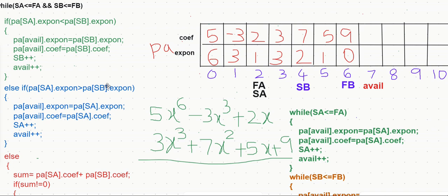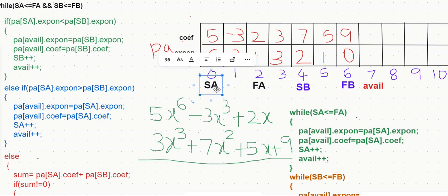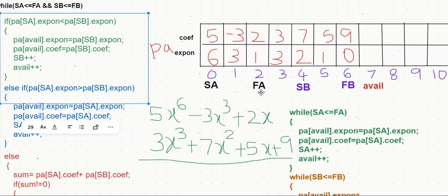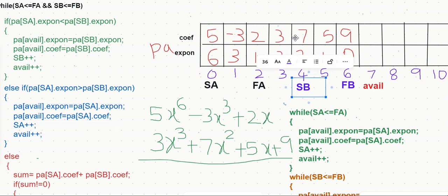We have already seen the polynomial representation and how we can store a polynomial into the array. Here we have two polynomials: 5x^6 minus 3x^3 plus 2x, and 3x^3 plus 7x^2 plus 5x plus 9. The data is already stored into array PA. The polynomial array has two fields: coefficient and exponent. Each index stores one term's data. SA is the start of your first polynomial, FA is the end of the first polynomial, SB is the start of polynomial B, and FB is the end of polynomial B.